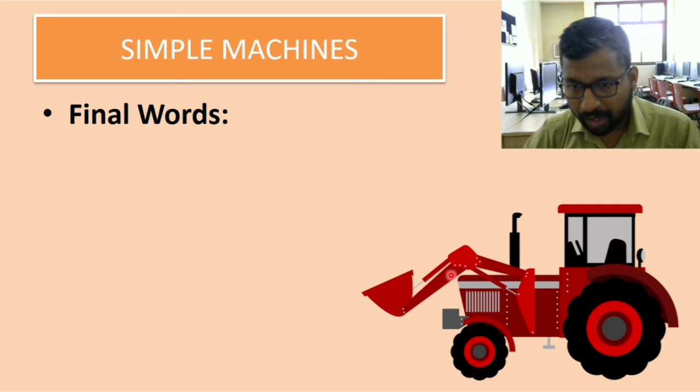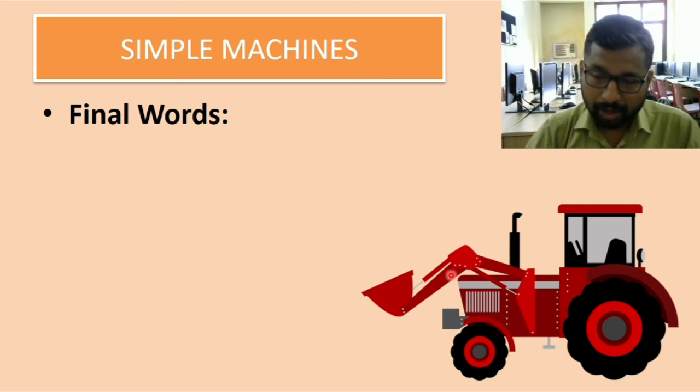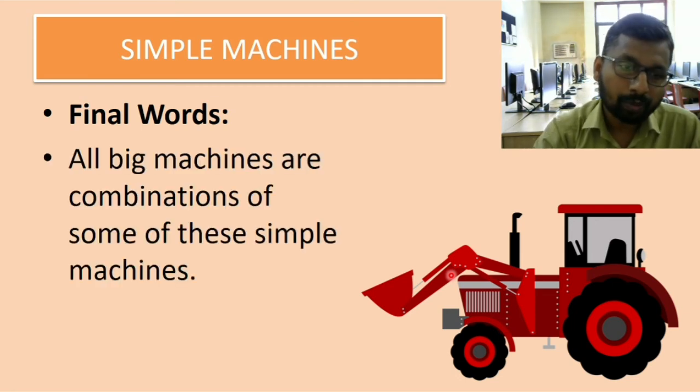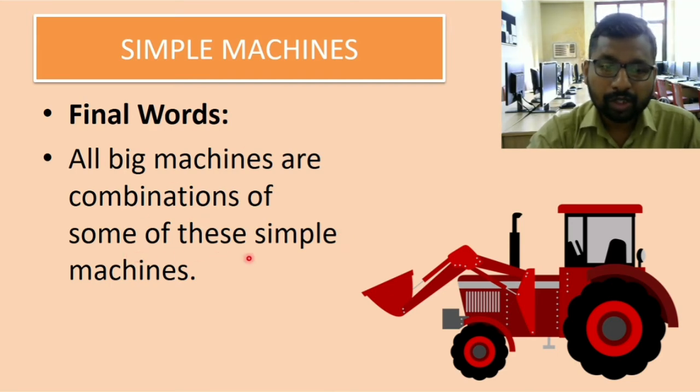Now, as you know, any vehicle you take, not only tractors or a specific vehicle, most of the big machines are made up of simple machines. So all the big machines are combinations of some of these simple machines that we studied today.